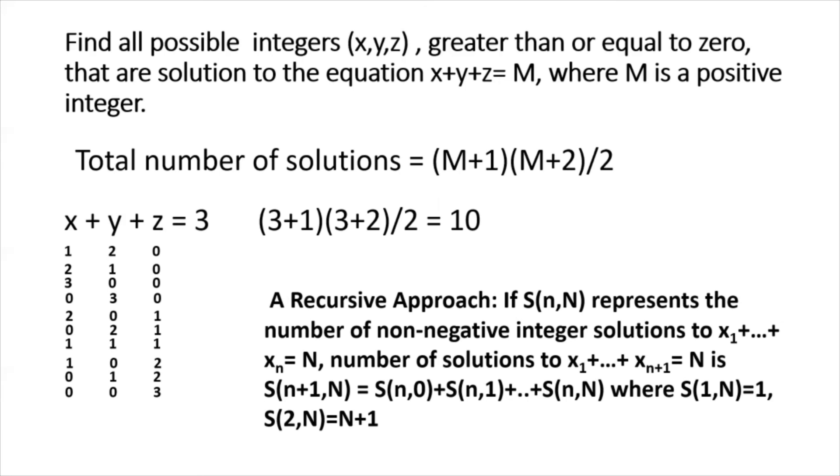Now, one thing that I'd like to explain is the approach that I just used to obtain the solution is what's called a recursive approach. So, recursive approach means that you basically involve repetition of a previous solution to obtain subsequent solutions. And I can generalize this recursive approach for this particular problem by saying that if s small n capital N represents the number of non-negative integer solutions to this small n variable problem, where I have sum of small n number of quantities equaling n, and remember, I'm again looking for non-negative integer solutions.